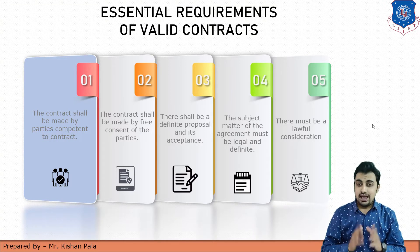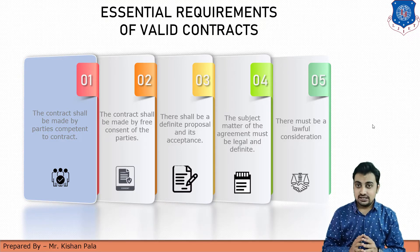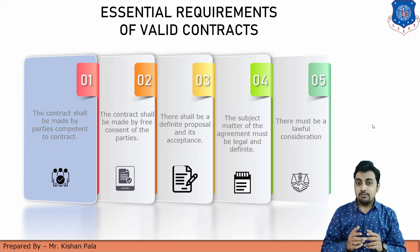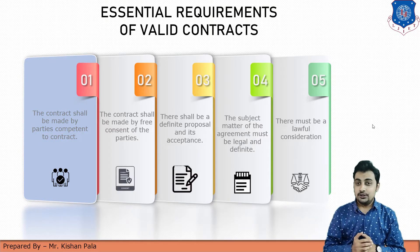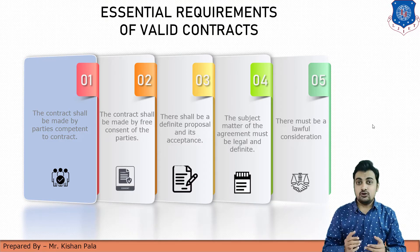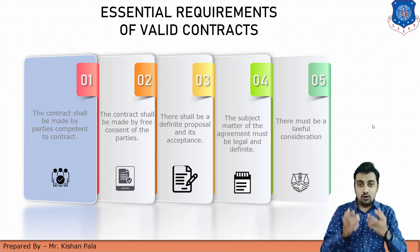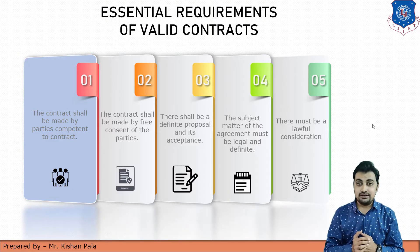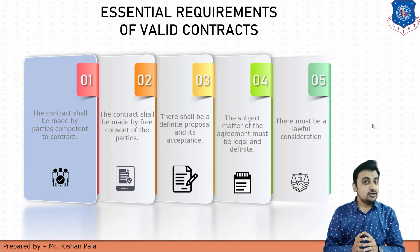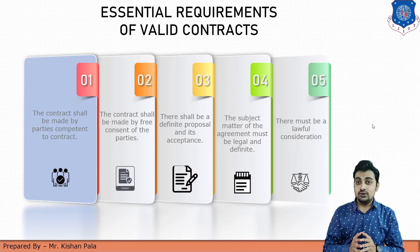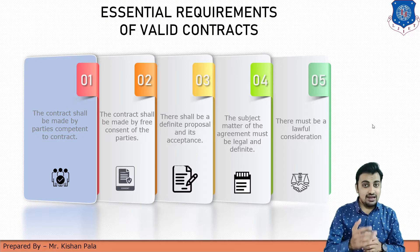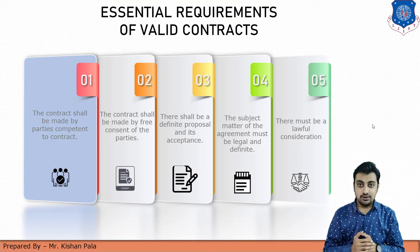There are a few essential requirements for valid contracts. It means if the owner is offering a particular offer to the contractor or any other stakeholders, the contractor or any other stakeholders will accept this offer. However, it doesn't mean that the contract is done. There are some valid essential requirements for valid contracts.